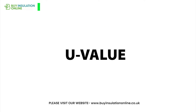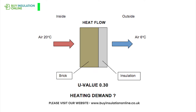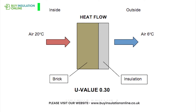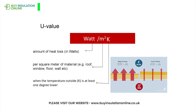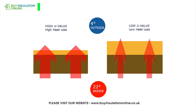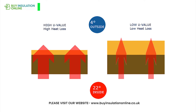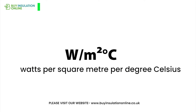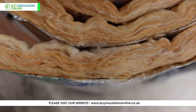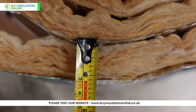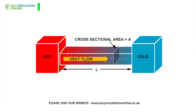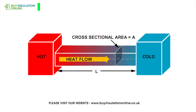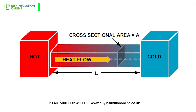U-value. U-value is a measure of how much heat passes through a given area of a material or a structure. U-value measures the thermal transmittance of materials as the rate of transfer of heat through matter. The lower the U-value, the better the insulation. U-value is expressed in watts per square metre per degree Celsius. U-value depends on the thickness and type of the material, as well as the temperature difference between the environments on either side of the material.